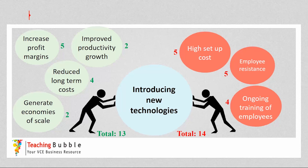In this case, managers could implement strategies to reduce employee resistance — perhaps by giving employees incentives or empowering them to be involved in the implementation of the technology. That may reduce employee resistance significantly, so as you can see, this number is reduced and there is now a greater chance of the change being implemented because the driving forces are outweighing the restraining forces. Managers can do this with each of the restraining forces to try and reduce their impact.